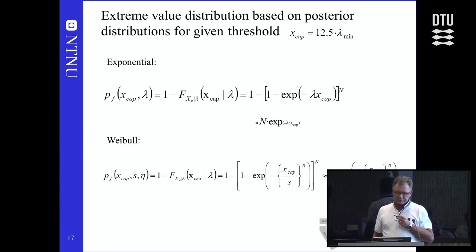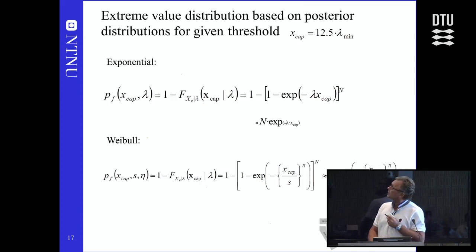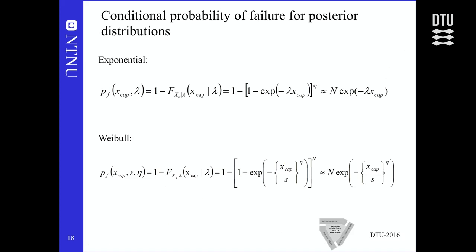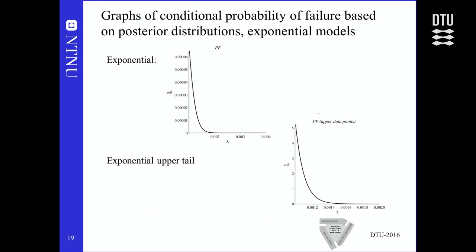With uniform prior distributions, we can look at extreme values based on the posterior. Using the basic initial distribution raised to the nth power assuming independence, and approximating for large n by an exponential expression, we introduce the posterior distribution to get the probability of failure conditional on the shape and scale parameters. Integrating gives the posterior probability of failure. For the exponential case, there is an increasing probability of failure for smaller lambda values; for the upper tail case, the shapes differ with a maximum of five versus a very small maximum for the full exponential.